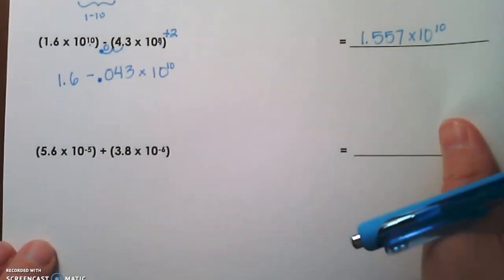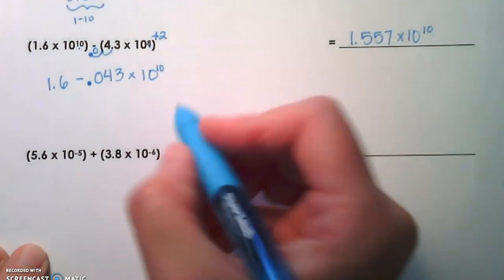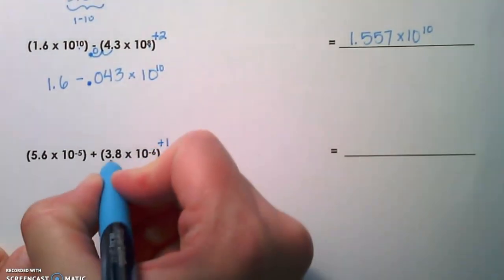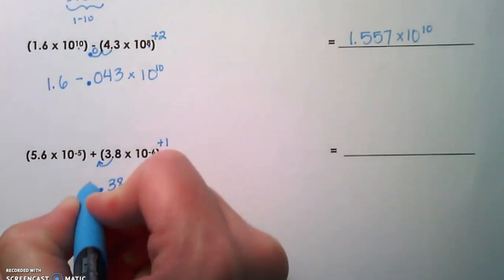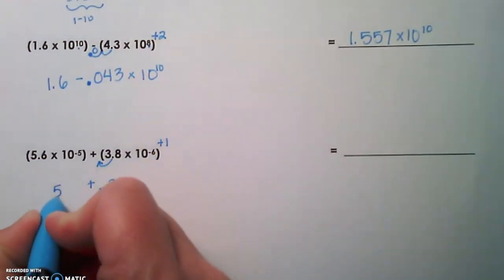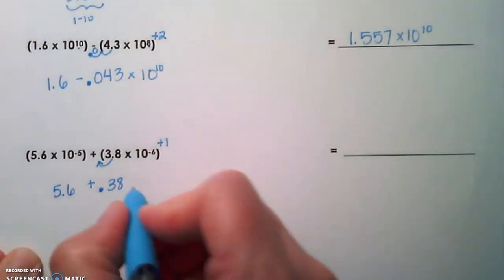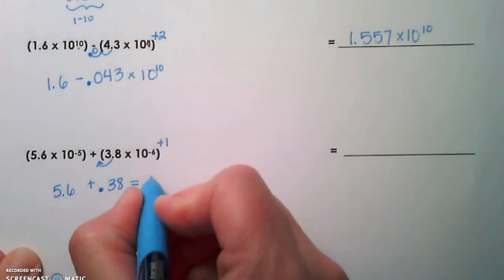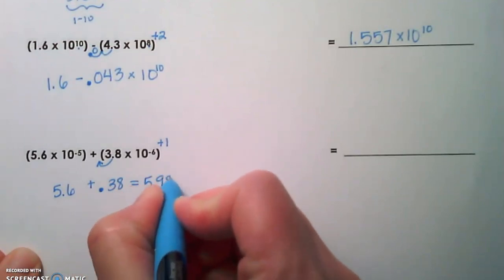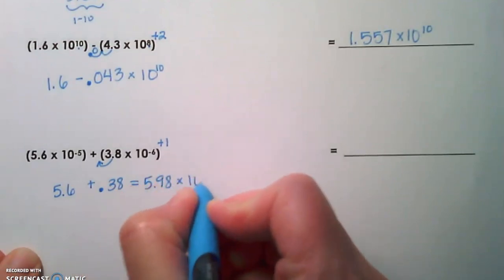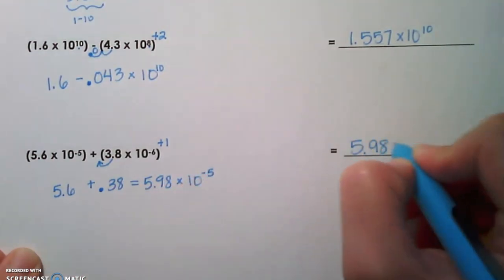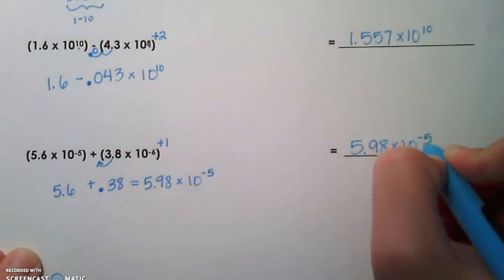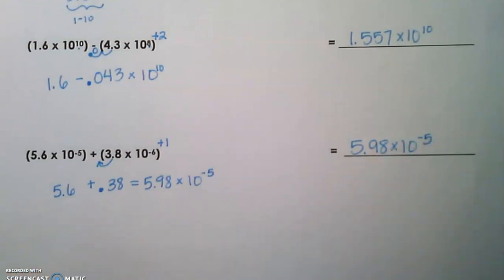Last example. We'll start with the smaller exponent, which is negative 6. We're going to add 1 to it, adjust the decimal. So we get 0.38. We are adding that to 5.6, which is going to give us 5.98. And we're going to keep that power of 10, 10 to the negative 5th. Our final answer is 5.98 times 10 to the negative 5th. I hope this has been helpful, and good luck.